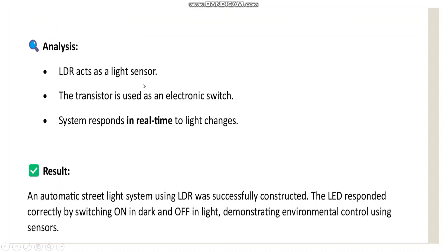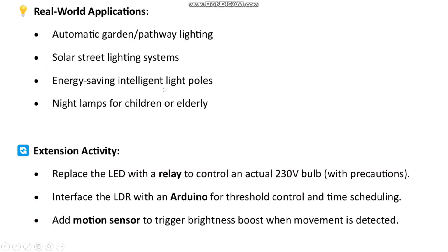Analysis: the LED acts as a light sensor and the transistor is used as an electronic switch for on/off state. Result: the automatic street light system using LDR was successfully demonstrated. The LED responded correctly by switching on in the dark and off during light.